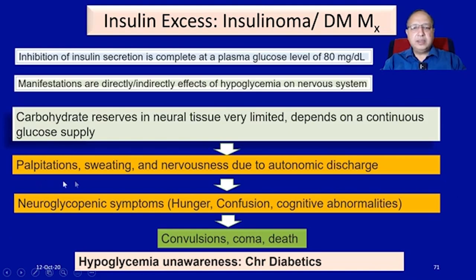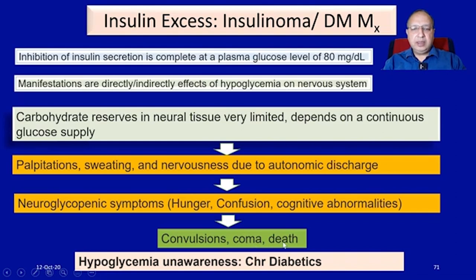Symptoms involve palpitations, sweating, and nervousness due to autonomic nervous system stimulation. There is another group called neuroglycopenic symptoms, which include hunger, confusion, and decreased cognitive function. If not controlled, it can lead to convulsions, coma, and death.